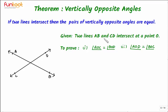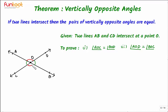What is given here: two lines AB and CD intersect at a point O. So this will be our point O where the lines are intersecting. We have to prove that vertically opposite angles — angle AOC and angle BOD are equal, meaning this angle equals this angle. And angle AOD is equal to angle BOC, meaning this angle equals this angle.